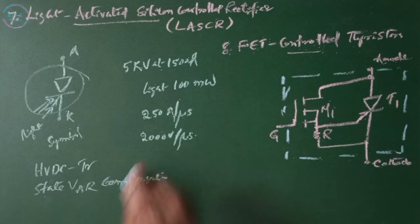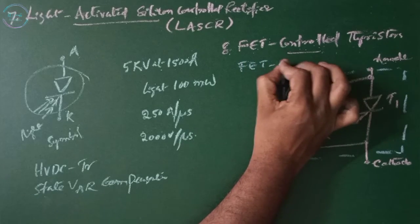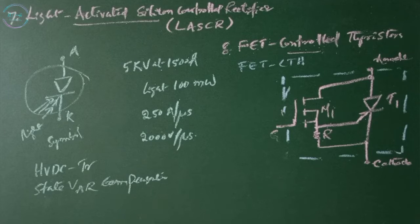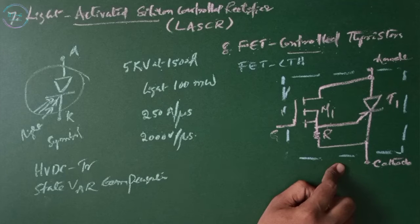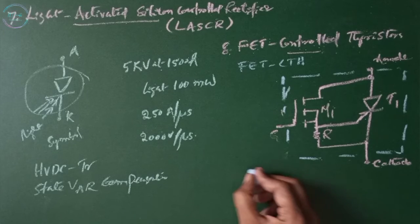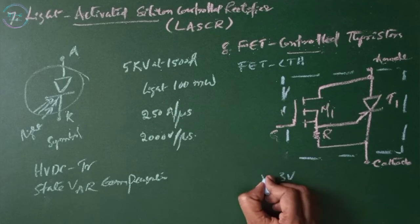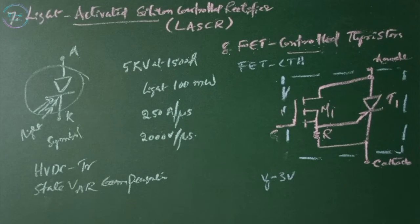FET controlled thyristor. FET control device combines MOSFET and thyristor in parallel as shown in this figure. If a sufficient voltage is applied to the gate of a MOSFET, typically the gate voltage, a triggering current for the thyristor is generated internally. It has high switching speed, high dI/dt and high dV/dt.